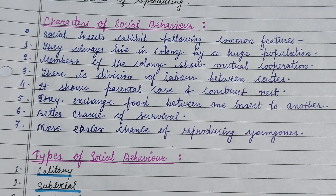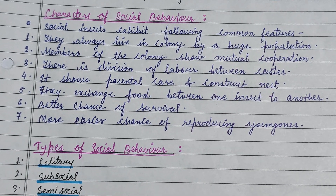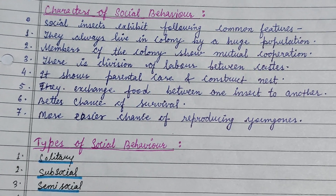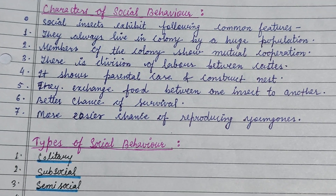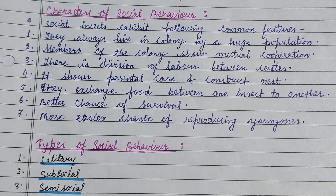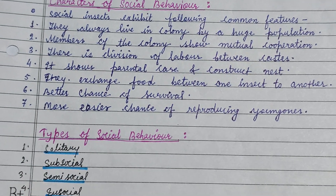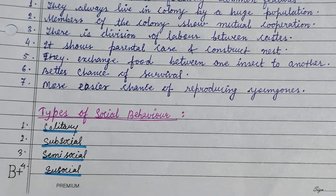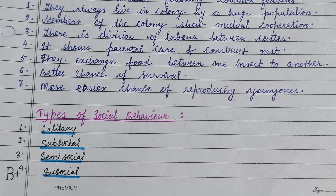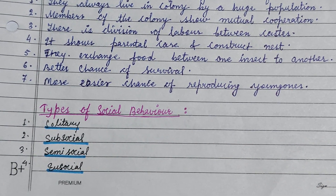Characters of social behavior: they live in a colony and show mutual cooperation; there is a division of labor between the castes; there is parental care; they construct nests; exchange occurs between one insect to another; there is a better chance of survival; and an easier chance of feeding the young ones.